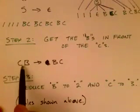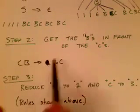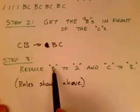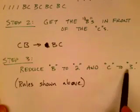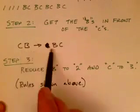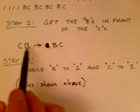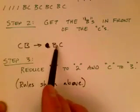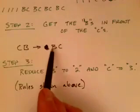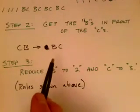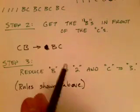Step 2 is to get the B's in front of the C's. A rule that changes CB into BC will move all the B's to the left. But wait — this rule is not a context-sensitive rule. You can't say which non-terminal is being changed into something and which is the context. So this is actually a rule from type 0 languages and it's not allowed. So we haven't finished our task — we haven't yet gotten a context-sensitive grammar.